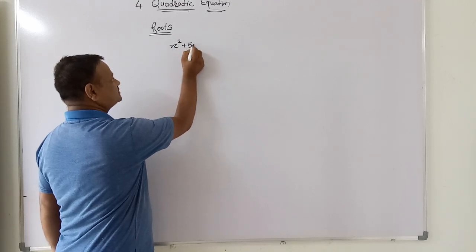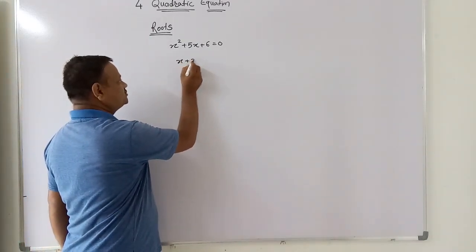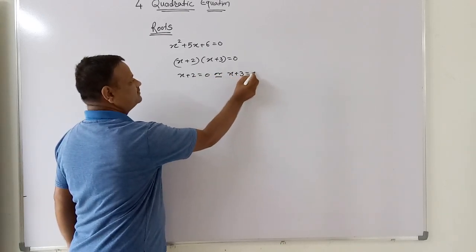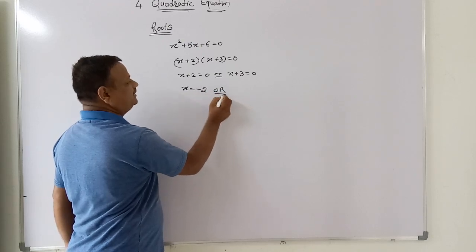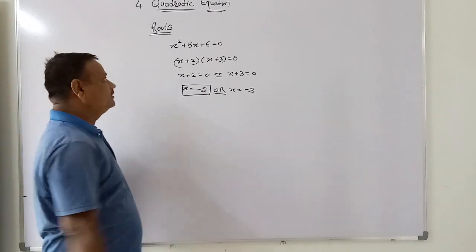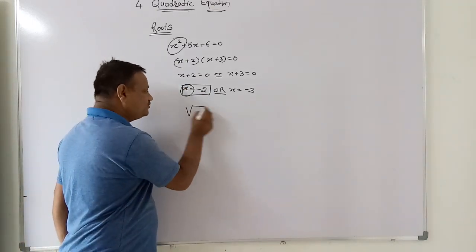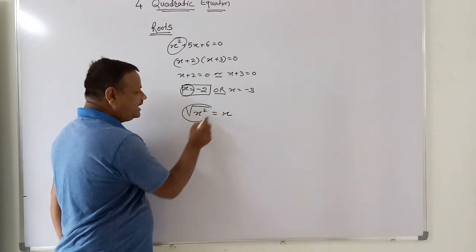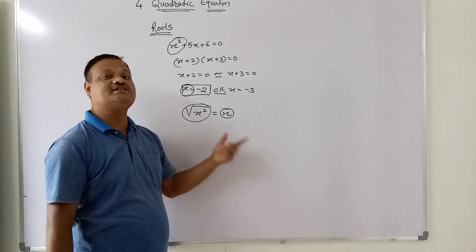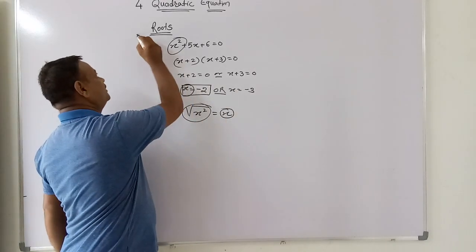For example, x² + 5x + 6 = 0. Here, (x + 2)(x + 3) = 0, that is x + 2 = 0 or x + 3 = 0. It means x = -2 or x = -3. Now, the equation contains x² and we have to find the value of x. Therefore, the square root of x² is nothing but x — we have to find the root of x², and therefore we get the value of x. That's why it is called a root, or we can say solution.